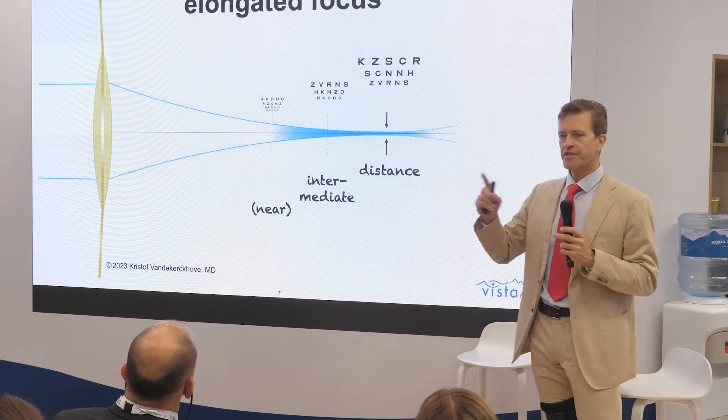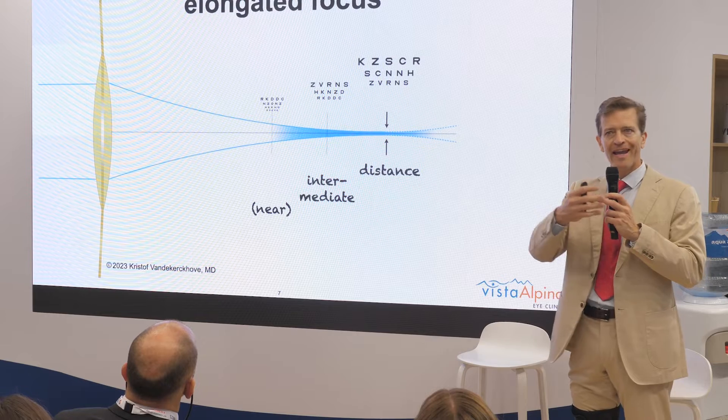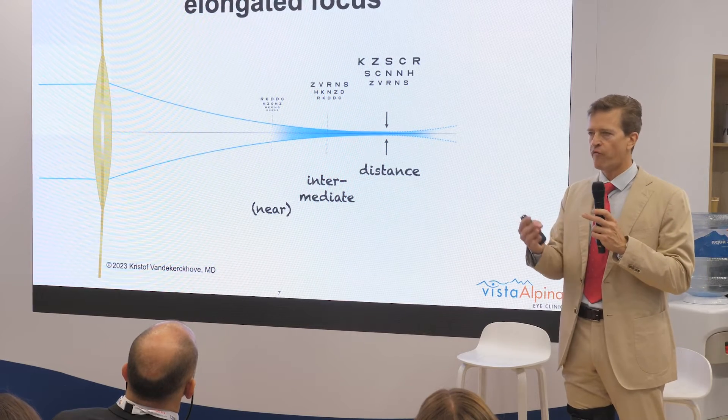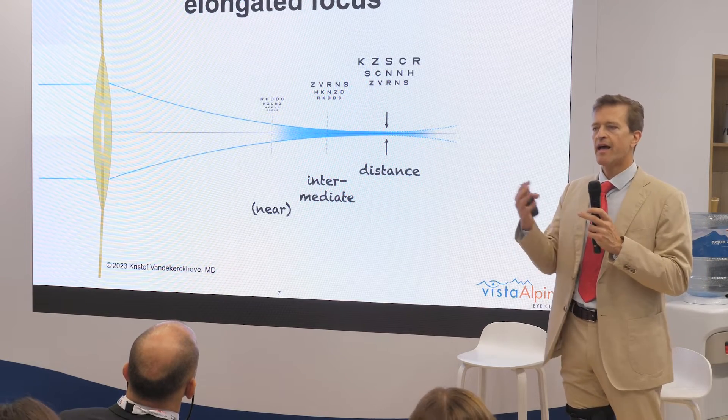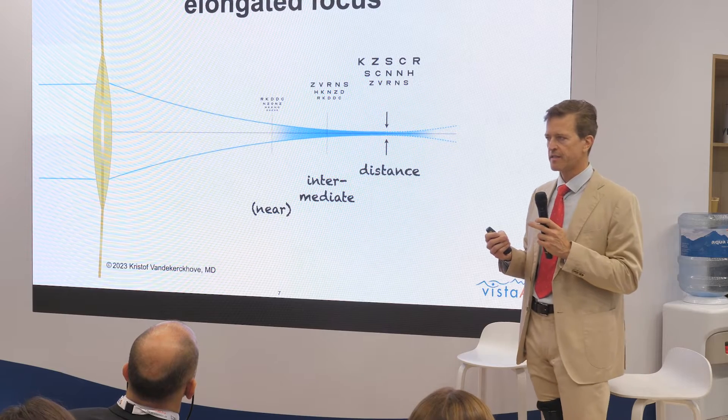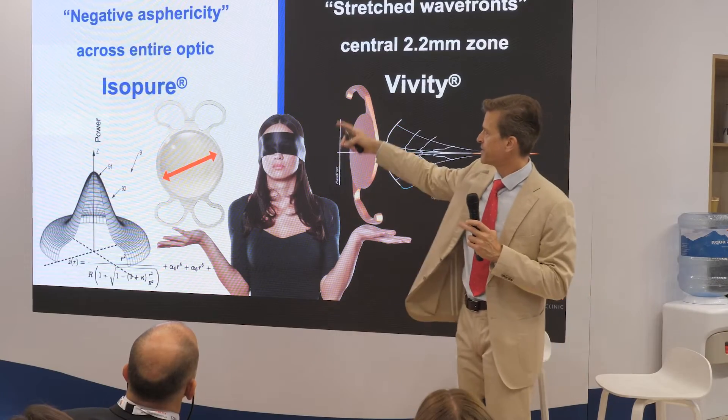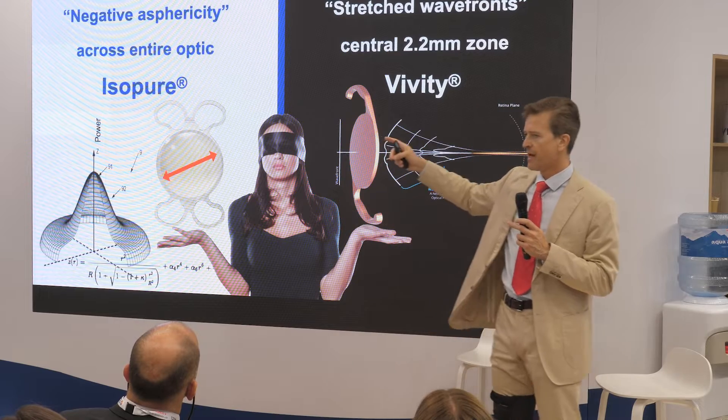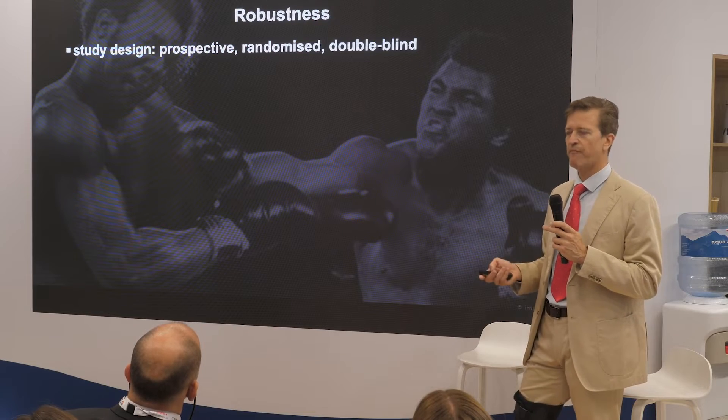All patients received minimal monovision — 0.5 diopters of myopia in the non-dominant eye — and all patients underwent immediate bilateral surgery. Both lenses produce an elongated focus with the aim of providing spectacle independence at intermediate distances and to some extent at near, especially when combined with mini monovision. One lens, isopure, uses negative asphericity, and the other, vivity, modifies wave zones using its central 2.2 millimeter zone.